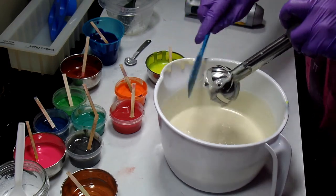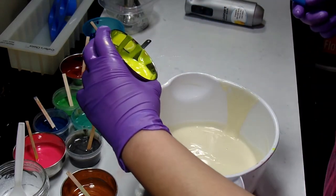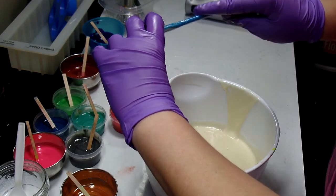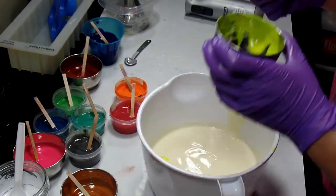We're going to do an in the pot swirl. What I'm going to do is I'm just going to pour each color in its own spot. Save a little bit for the top.